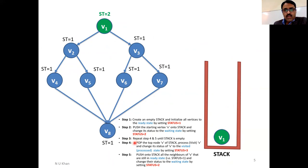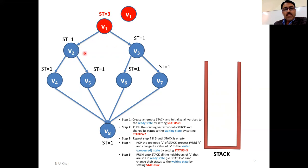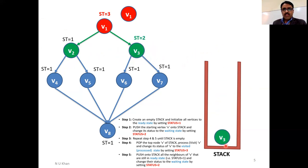According to step three, we repeat steps four and five. Pop the top node — which is V1 — visit it, and change its flag value to three. Then in step five, push all neighbors of V1 that are in the ready state. V1 has two neighbors: V2 and V3. We push V3 and then V2 onto the stack, setting their flag values to two. V2 and V3 are now waiting for their visit.